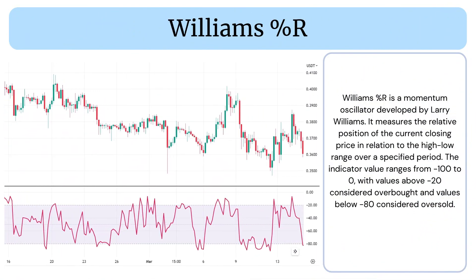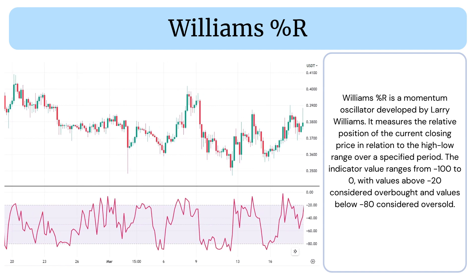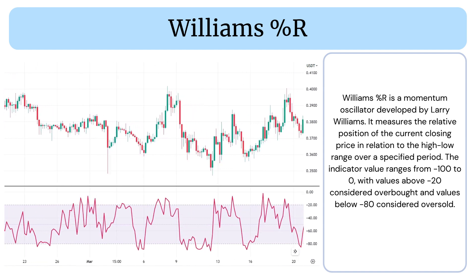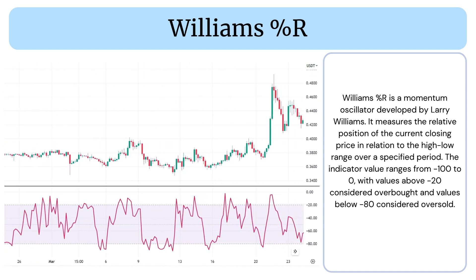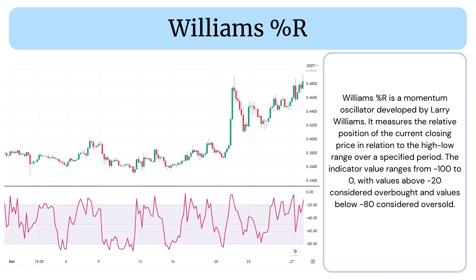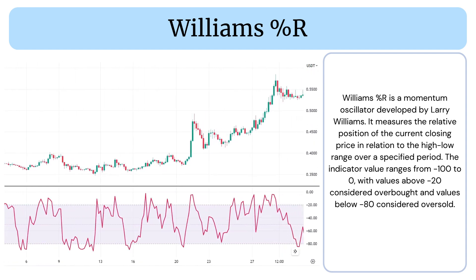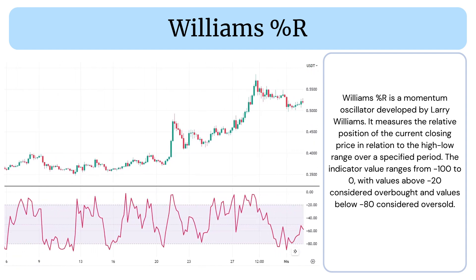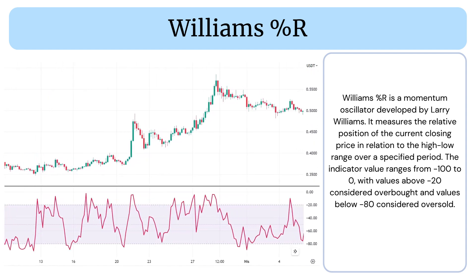Williams Percent R is a momentum oscillator developed by Larry Williams. It measures the relative position of the current closing price in relation to the high-low range over a specified period.